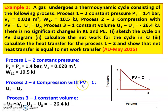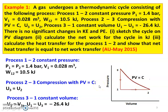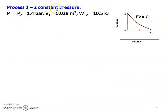For the constant PV process, the condition is U2 equal to U3. Process 3 to 1 is a constant volume process, V1 equal to V3, and U1 minus U3 equal to minus 26.4 kilojoules. We have to calculate the net work done and prove that net work done equals net heat transfer. For constant pressure process 1 to 2: P1 equal to P2 equal to 1.4 bar, V1 equal to 0.028 meter cube, W1 equal to 10.5 kilojoules.